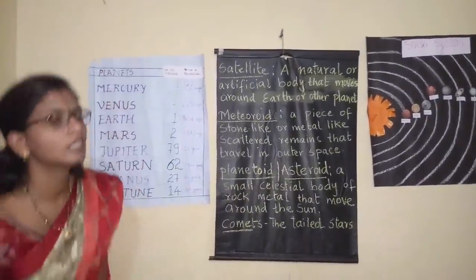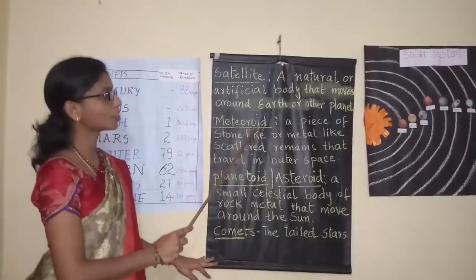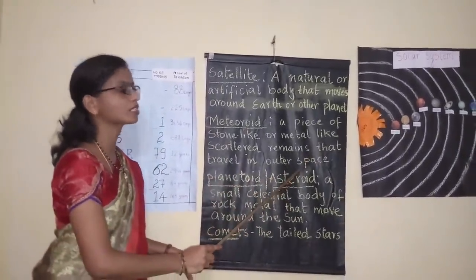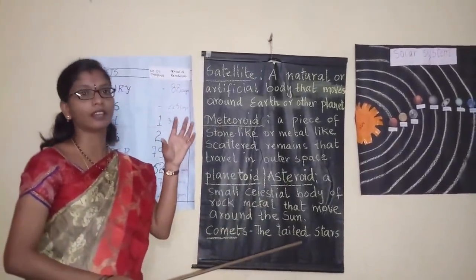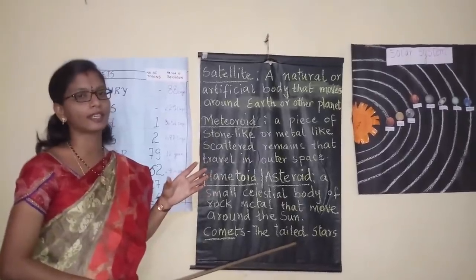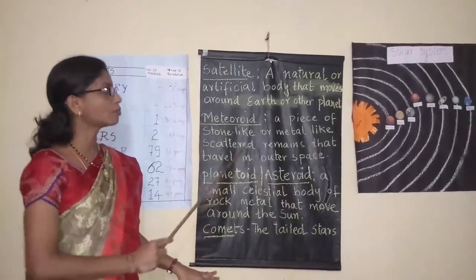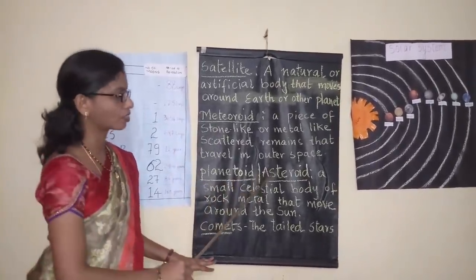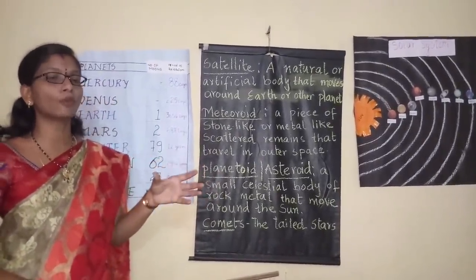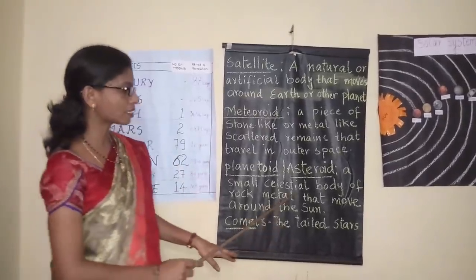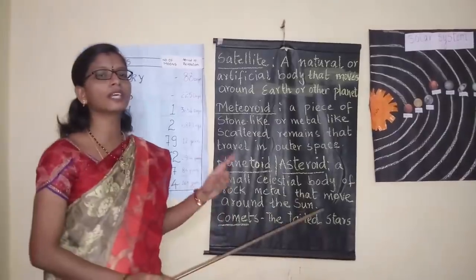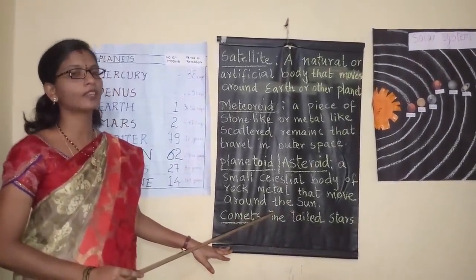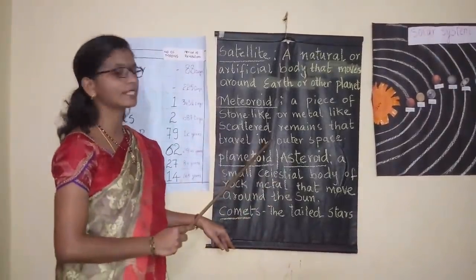Today we are also going to learn about meteoroids. A meteoroid is a piece of stone-like or metal-like scattered remains that travel in outer space. The falling stars we see in the sky are known as meteors. Meteoroids, satellites, and planetoids are all members of the solar system. A planetoid, also known as an asteroid, is a small celestial body — a natural body found in the universe — made of rock or metal that moves around the sun. It is also known as a minor planet.